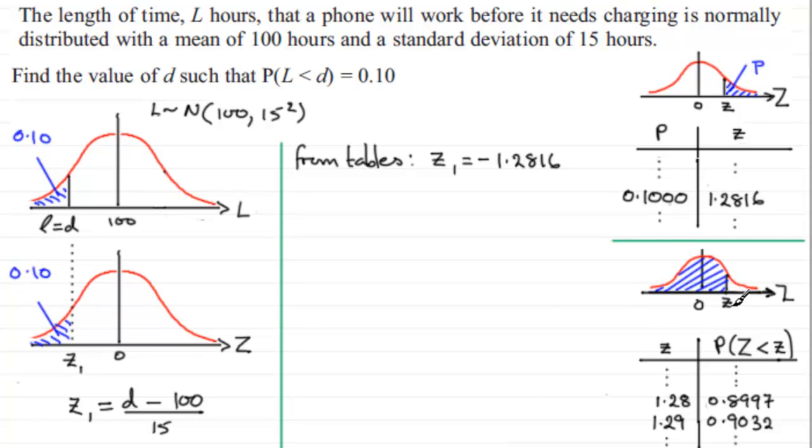I find that I've got two values here close to 0.90. The closest one is this one here, 0.8997. And I can see the corresponding z value would have been 1.28. 1.28 here would have given 90% that way, 10% that way.